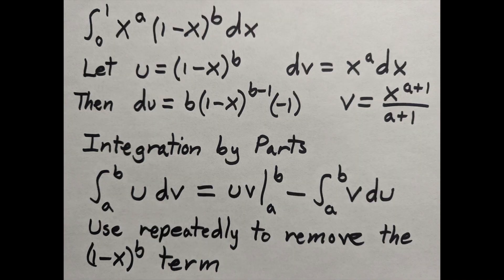I'm going to integrate by parts. This is going to make the power of a go up 1, the power b go down 1, and by doing that repeatedly, I can get the 1 minus x to the b factor to disappear and get an easy integral.